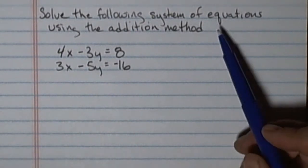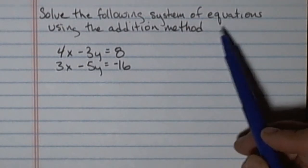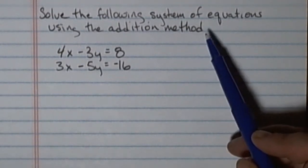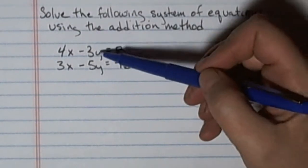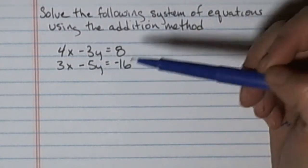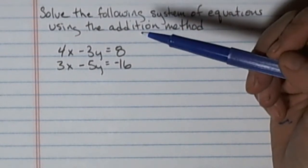This problem is asking me to solve a system of equations using the addition method. In the addition method, I would like to have the equations add so that one of the variables will drop out or add to zero when I add.